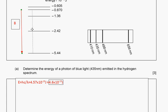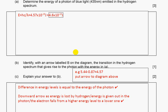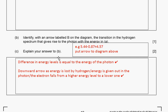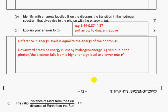This is my transition. Explain your answer: the difference in energy level is equal to the energy of the photon. Downward arrow as energy is lost. Electron falls from high energy level to lower energy level.